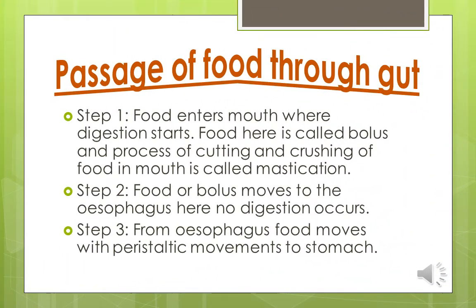Now let's see the passage of food through the gut. Step 1: Food enters the mouth where digestion starts. Food here is called bolus, and the process of cutting and crushing of food in the mouth is called mastication.